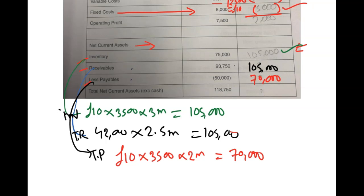Now, inventory and receivables are current assets, and payables is a current liability. Your net current assets: £105,000 plus £105,000 minus £70,000 is £140,000. That was so easy peasy.